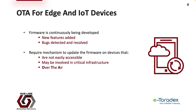Let's talk about the motivation behind and the requirements associated with managing Edge and IoT devices. Firmware and software is continuously being developed — test engineers are always identifying deficiencies and bugs, and customers are requesting additional features. Thus, we need a mechanism to update firmware on devices that are not easily accessible via physical means, or that may be part of critical infrastructure requiring minimal downtime. This is what is referred to as an OTA, or over-the-air, update mechanism.